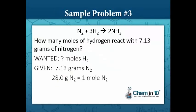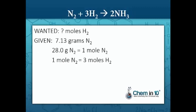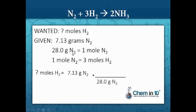We know that one mole of nitrogen has a molar mass of 28.0 grams per mole, and we also know that one mole of nitrogen reacts with three moles of hydrogen — we get that from the balanced equation. We set up our problem: question mark moles of hydrogen equals 7.13 grams of nitrogen. To cancel out grams of nitrogen, we put 28.0 grams of nitrogen in the denominator, equal to one mole of nitrogen in the numerator, and grams of nitrogen cancel out.